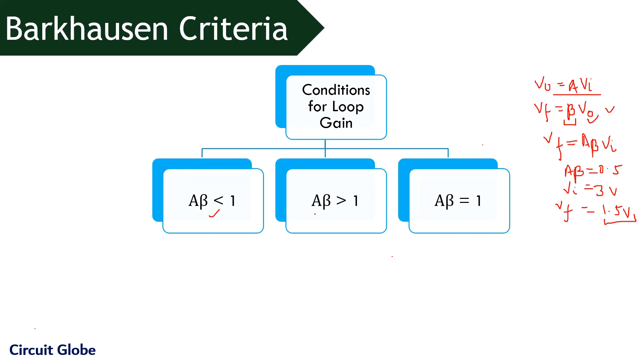In the next condition, where A beta that is the loop gain is greater than 1, let us see what happens. So suppose if we consider A beta as 2 and the input value of voltage is 3 volts. So in this particular case, the feedback voltage will become 6 volts which was earlier 1.5 volts. And so we can see that the value has increased.